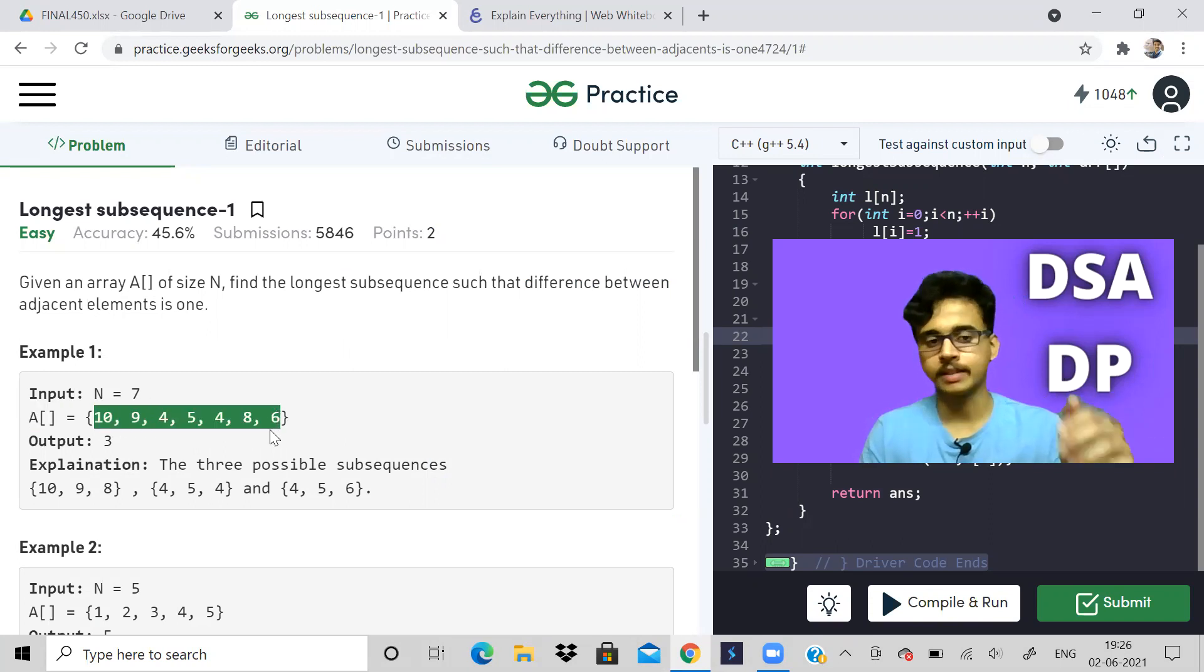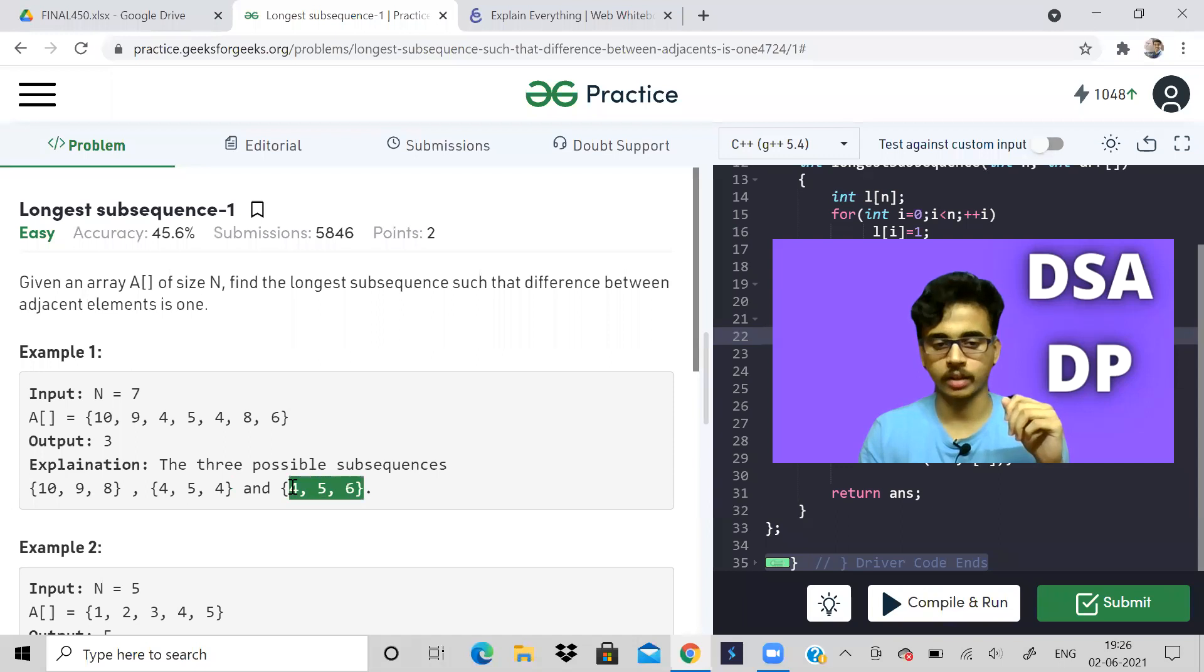So let us look at this example. The array is like this and they say that the answer is three. That means it can be either this subsequence or this subsequence or this one. Notice that difference between these two elements and difference between these two elements, if you take absolute value, you will get one.